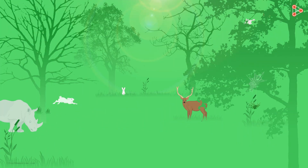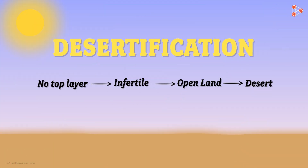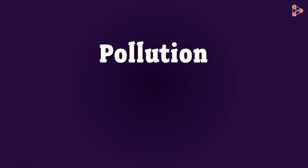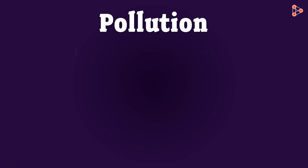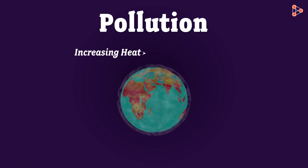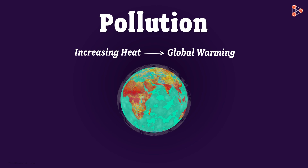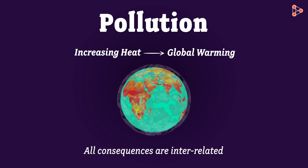This process is called desertification. Land that once harboured rich trees and wildlife now remains a desert devoid of all life. Increased release of harmful gases has caused global warming, which pollutes the air around us. It is therefore evident that all these consequences are interrelated.